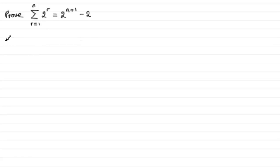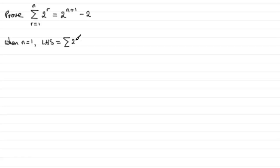So we start by testing it for when n equals 1. The left hand side is equal to the summation of 2 to the power r, r going from 1 to 1. So we've just got one term — 2 to the power 1, which we know is 2.